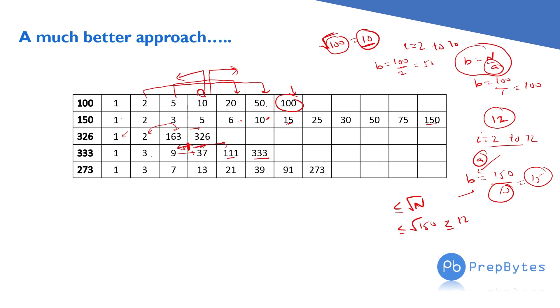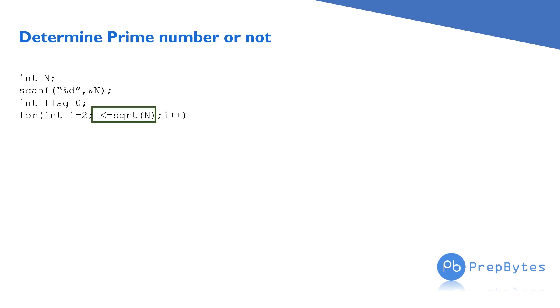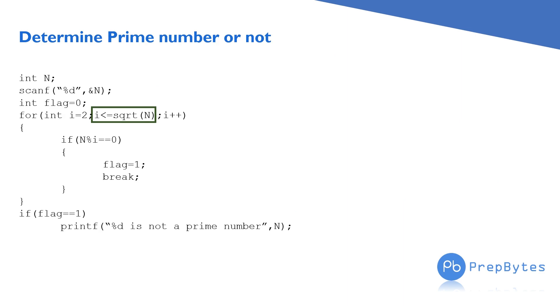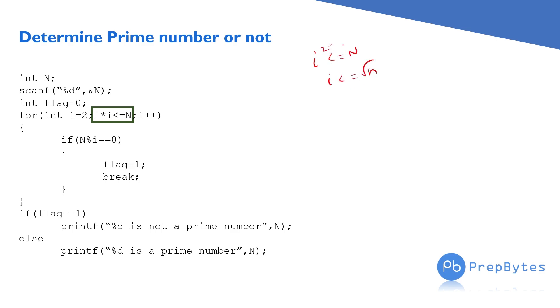So we run our loop from i = 2 to √n. The only change in the code is the loop condition: i ≤ √n, or equivalently i × i ≤ n — both are the same since taking the square root gives i ≤ √n.